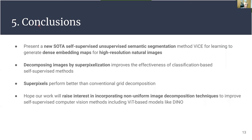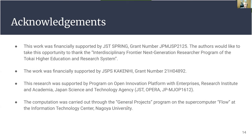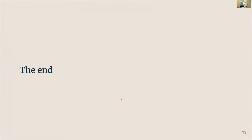To conclude, we presented a new state-of-the-art self-supervised unsupervised semantic segmentation method called VICE that learns to generate dense semantic embedding maps for high resolution natural images. We do so by decomposing images using superpixelization to significantly improve the effectiveness of clustering-based self-supervised methods. We also show that superpixels outperform conventional grid-based decompositions. We hope our results will further increase interest in incorporating non-uniform image decomposition techniques to improve other self-supervised computer vision methods, including transformer-based ones.